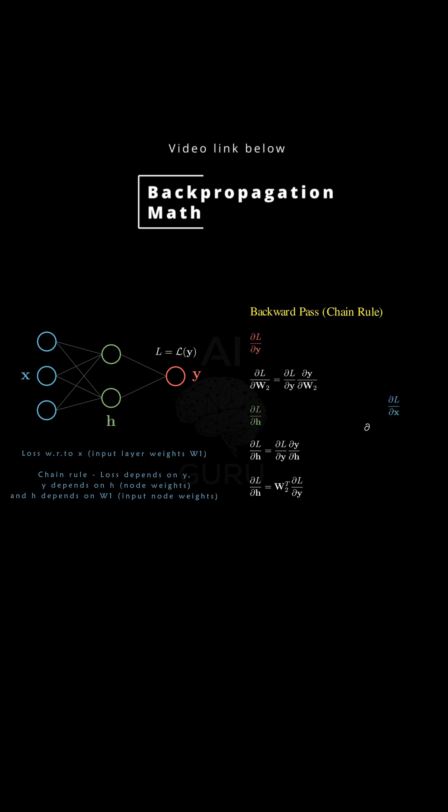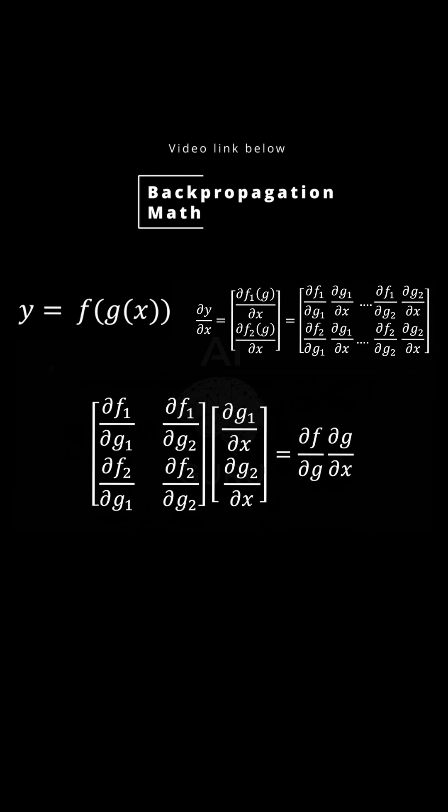Wait, really? Yes. If you have a nested function f of g of x, where these are all vectors representing network layers, the overall Jacobian is just the Jacobian of f with respect to g multiplied by the Jacobian of g with respect to x.